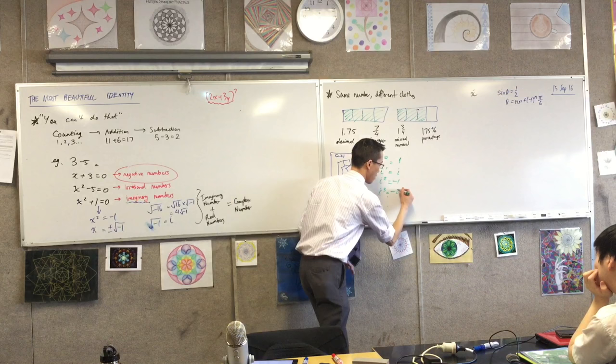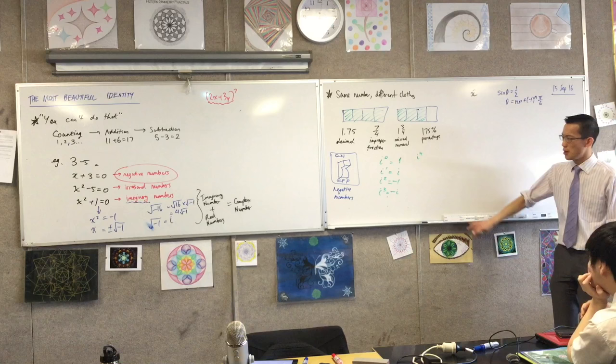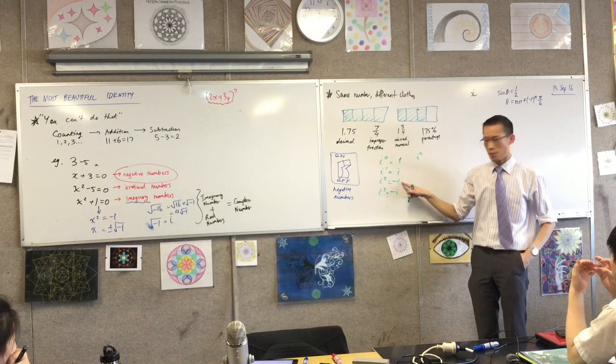Okay, now here's where it gets interesting. If I, and you'll see why I've drawn over here in a second, if I go i to the four, square root of negative one times square root of negative one times square root of negative one times square root of negative one. Well, this is i squared times i squared, right? But I know what that is. That's negative one squared. That's one.